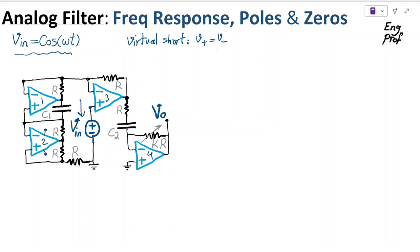V_in is applied between the positive terminal of op-amp 3 and ground. Because of virtual short, we can make the assumption V_in is also at the negative terminal. As long as all op-amps are in the linear region of operation, this node V_in is the same as this node, the same as this node, the same as this node, and this node. So V_in appears here as well.